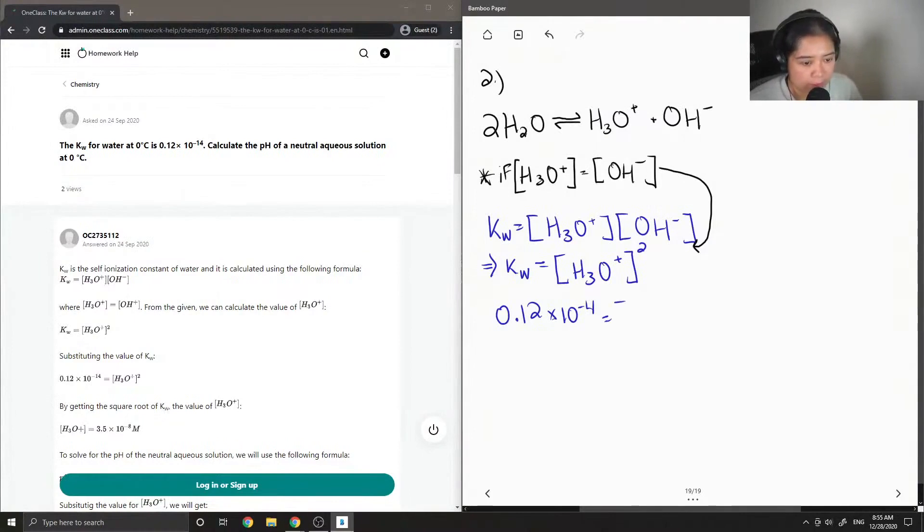And then solve for our unknown which is the concentration of H3O plus. Okay so to isolate this we just need to take the square root of both sides.